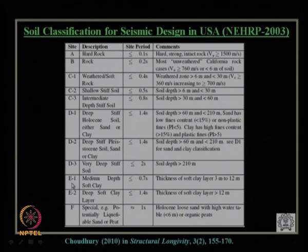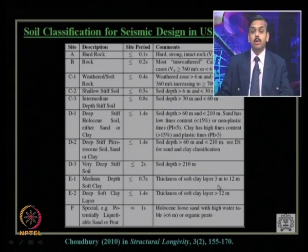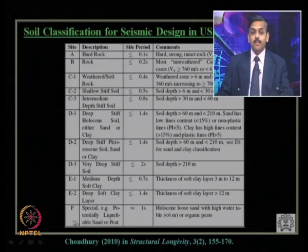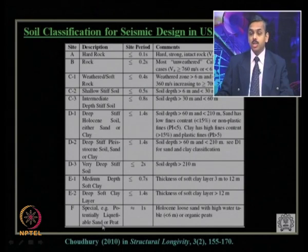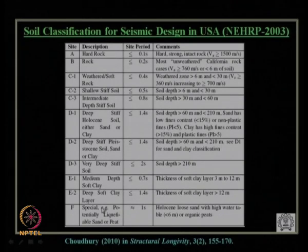Site class E is sub-divided into E1 (medium depth soft clay, site period ≤ 0.7 s, soft clay thickness 3–12 m) and E2 (deep soft clay, thickness > 12 m). Site class F refers to special soils — potentially liquefiable sand or peat — loose sand with high water table with high liquefaction potential, and organic peat content. These are the most vulnerable site types with respect to earthquake.